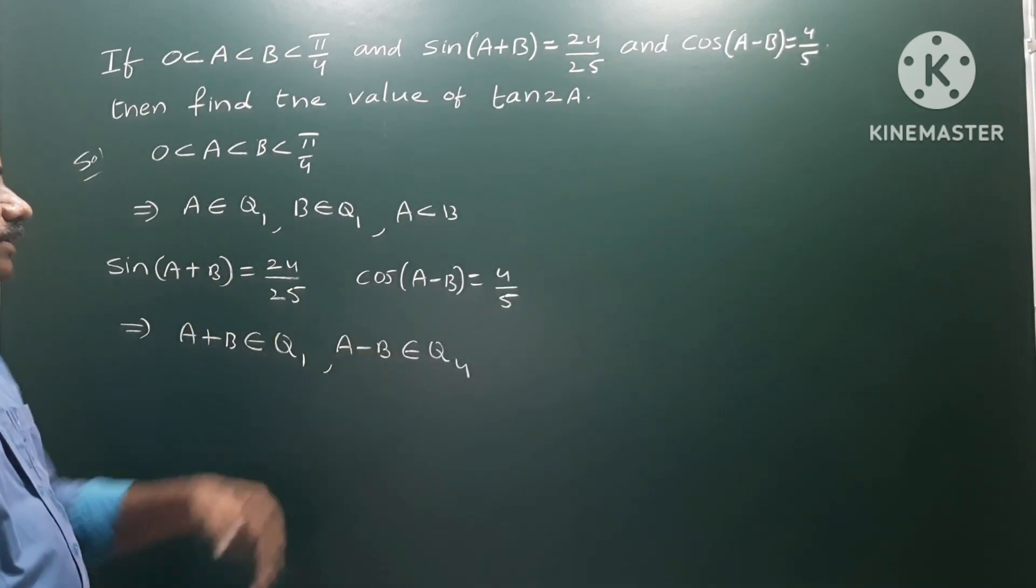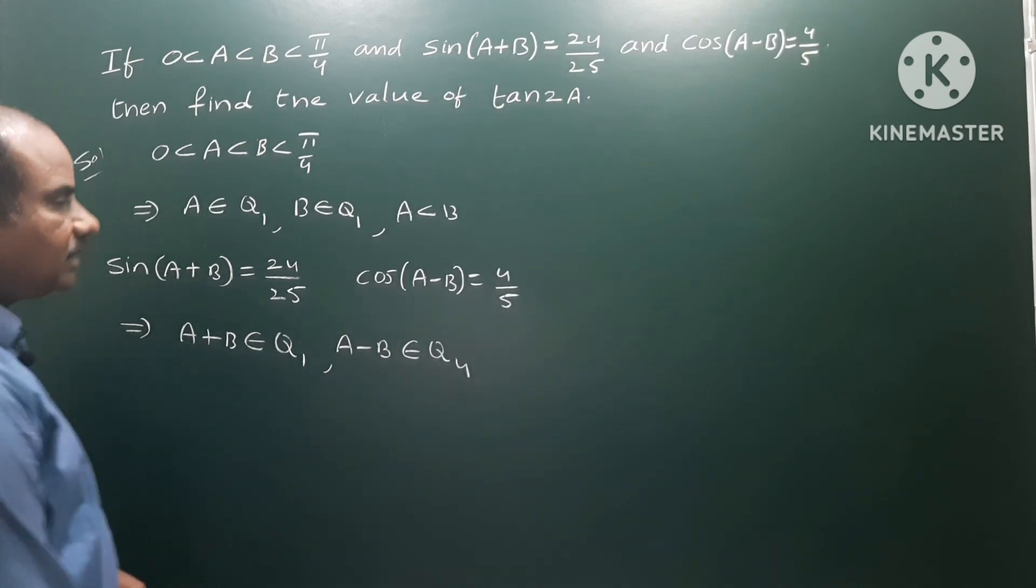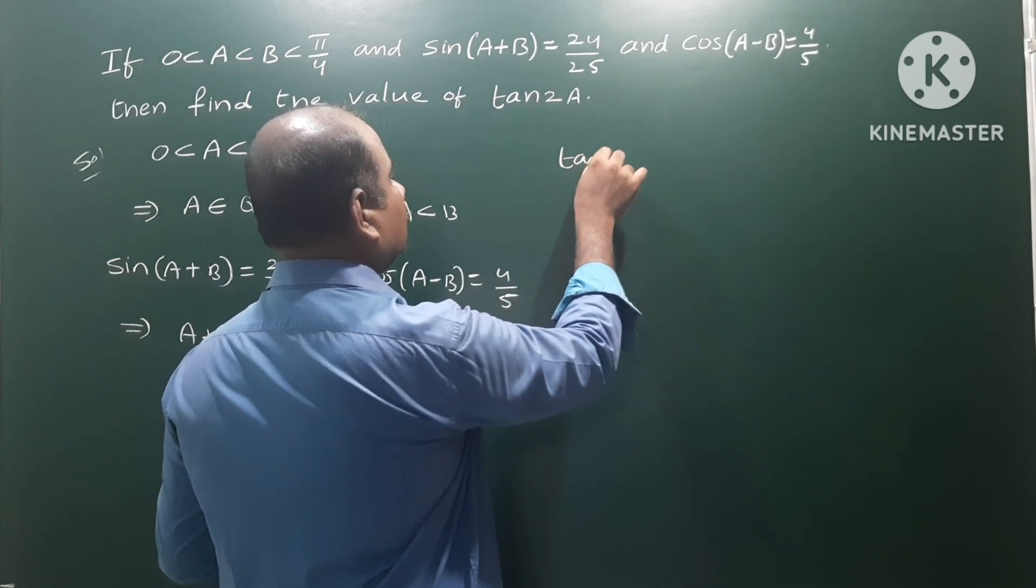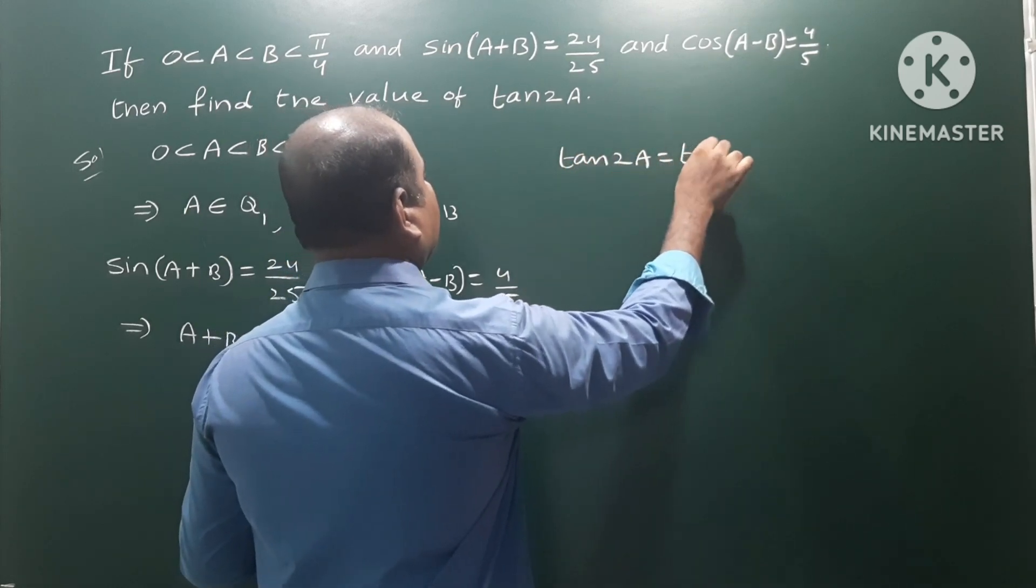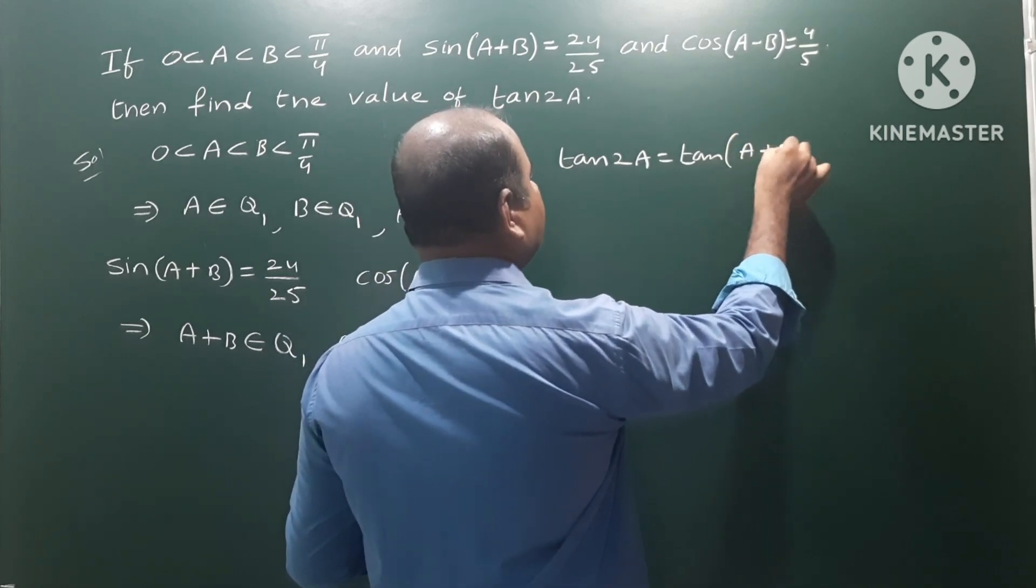So A-B belongs to Q4. A is less than B, so A-B is automatically negative. A negative angle is in the 4th quadrant. That means A-B belongs to Q4.